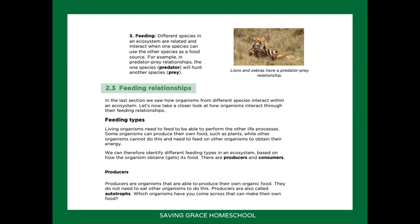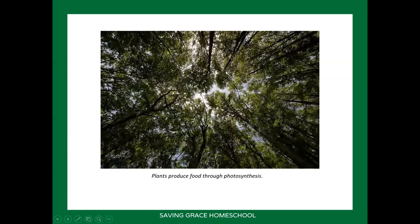This leads to feeding relationships. There are two types of feeding types in an ecosystem, based on how the organism obtains its food: producers and consumers. Producers are able to produce their own food — they don't need any help from other organisms. Producers are also called autotrophs, and the only types of producers are different forms of plants. Any plant or tree that can photosynthesize is a producer.